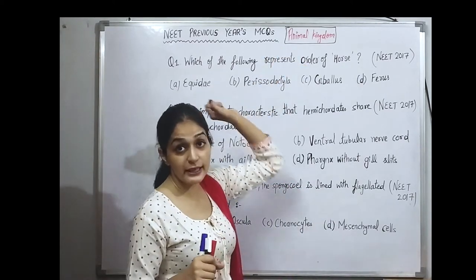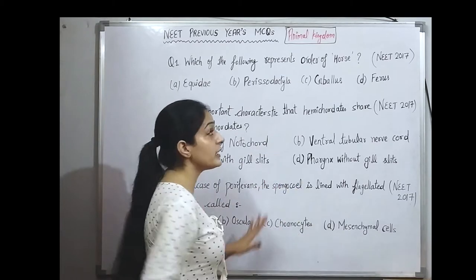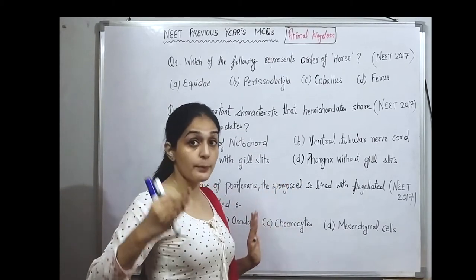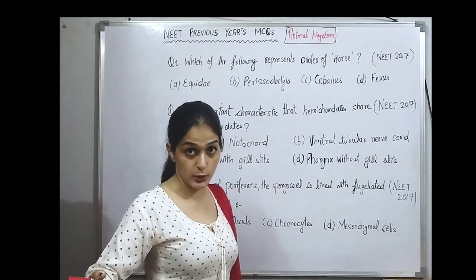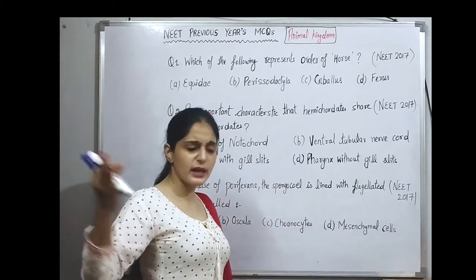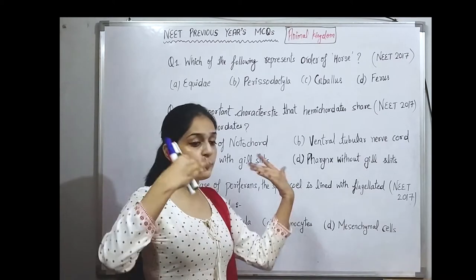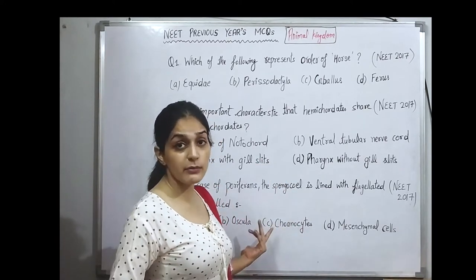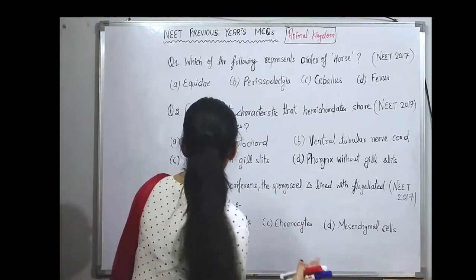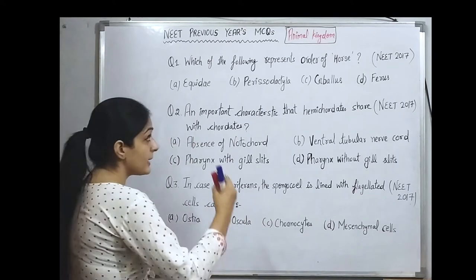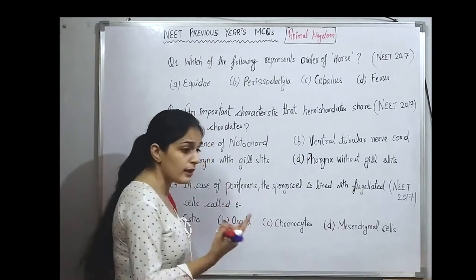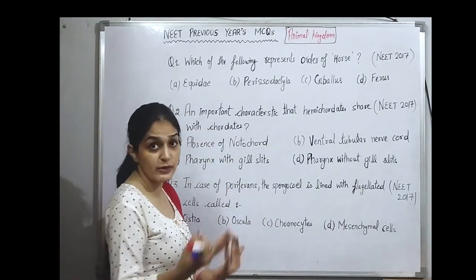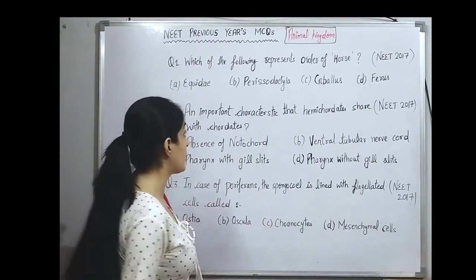I have taken the chapter of Animal Kingdom. This chapter is very important and has a lot of scoring potential. There are many examples with different scientific names and vernacular names. This chapter can give you a different level in your biology.